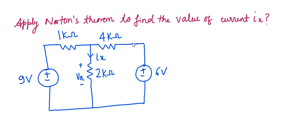In this example we will revise Norton's theorem. We are using a very basic circuit which has two different voltage sources of 9 volt and 6 volt. Before starting Norton's theorem, we should know that any circuit can be converted into a Norton's equivalent circuit using Norton's theorem.